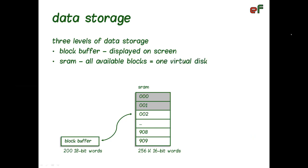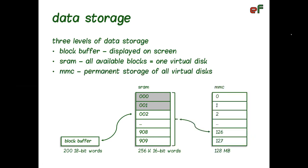The second level of data storage is provided by the external memory. All accessible SRAM is divided into 910 blocks. When we use editor to modify content of a block, each change is immediately copied from the block buffer into the appropriate block in SRAM. The set of all blocks in SRAM forms one virtual disk. And the third level of data storage uses multimedia card. The card holds 128 virtual disks. Users can choose which virtual disk they want to work with, copy its whole content or individual blocks into SRAM, and store it back as a whole or as individual blocks.